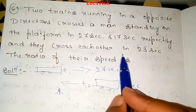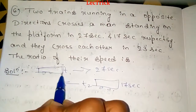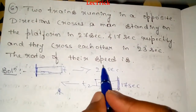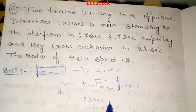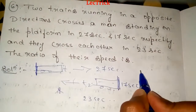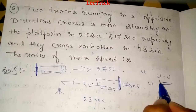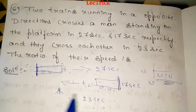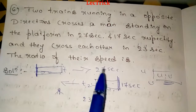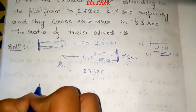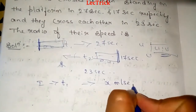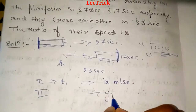The two trains cross each other in 23 seconds. Let us assume the speed of the first train t1 is x meters per second, and the speed of the second train is y meters per second.